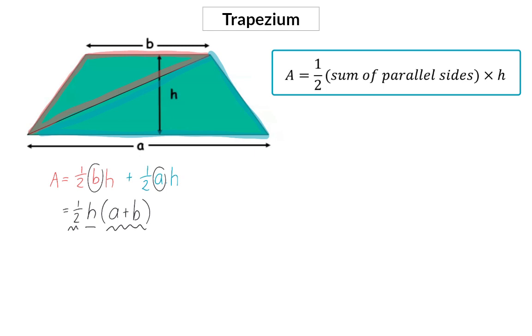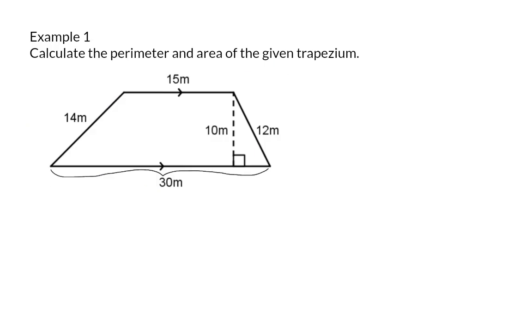Let's go and have a look at some examples. For the perimeter, we need to add up all the sides. And I'm going to start with 14 plus 30 plus 12 plus 15. So the perimeter is 71 meters.